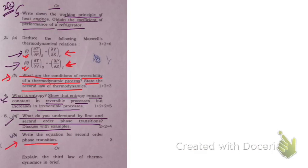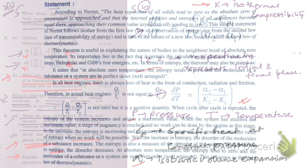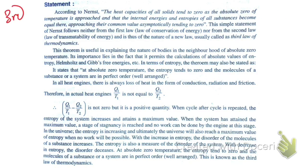You are also asked to write the equations of second order phase transition. These are the two equations of second order phase transition — the meanings of the symbols are mentioned here. Make sure to define the symbols either at the start or end of your answer, not in a scattered way. Question 5b asks to explain the third law of thermodynamics briefly — here is the statement and explanation of the third law.